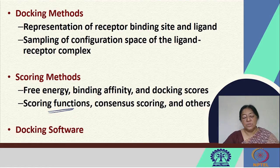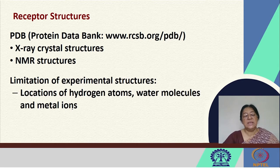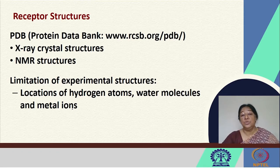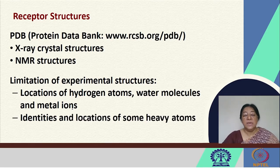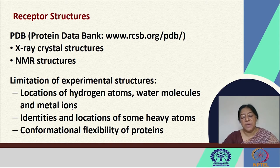Docking software uses receptor structures available in the protein data bank as X-ray crystal structures or NMR structures. Limitations include the locations of hydrogen atoms, water molecules, and metal ions. When docking a ligand to check for possible hydrogen bonding, we need the locations of hydrogen atoms and the overall charge on residues as they exist in solution. The conformational flexibility of proteins is often not fully considered due to the high computational cost.